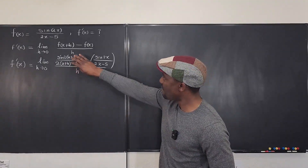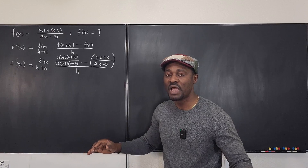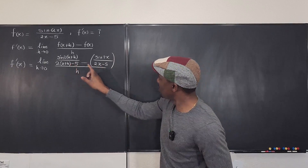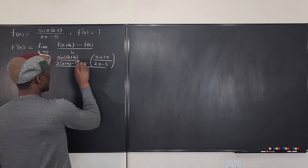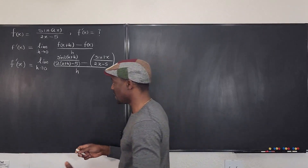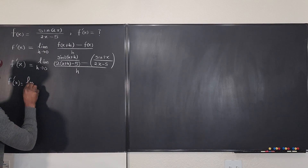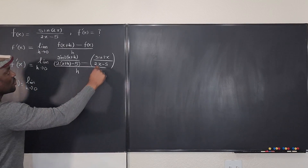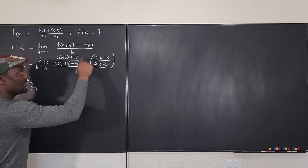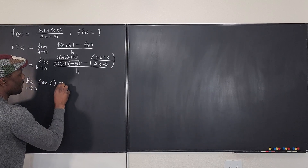Firstly, you do not want to have a rational expression within a rational expression, so we want to get rid of these two denominators first. Generally what I suggest you do is take these two denominators, make them a product, and use it to multiply each term on top and bottom. Essentially what you'll find is that it's as if you're doing cross multiplication.